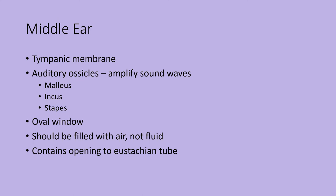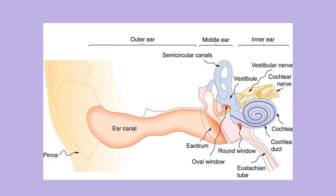The stapes is connected to the oval window and causes the oval window to vibrate. The middle ear should be filled with air, not fluid. The tube connecting the middle ear to the pharynx is called the Eustachian tube in your textbook, though other books call it the auditory tube or the pharyngeal tube.